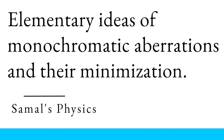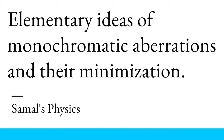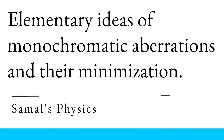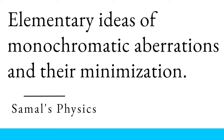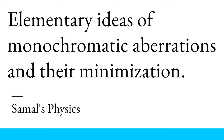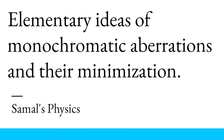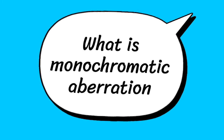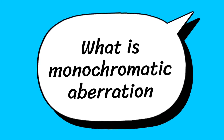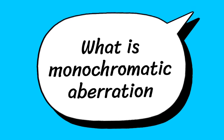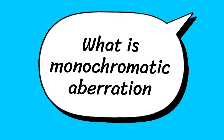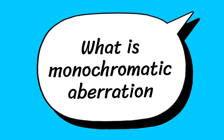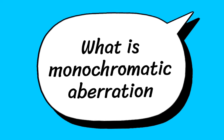In this video, we will discuss monochromatic aberrations and how these monochromatic aberrations can be minimized. What is aberration? Aberration means deviation of light rays that results in an imperfect image.